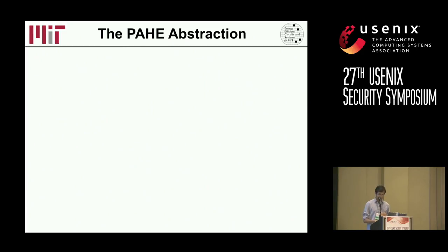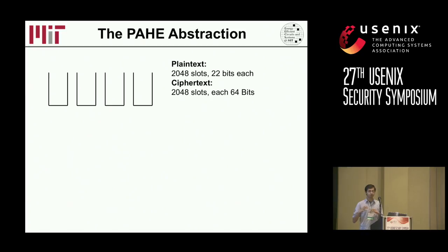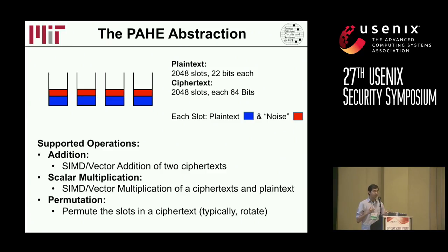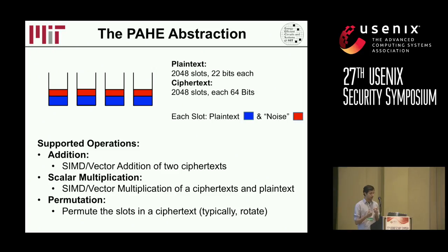Homomorphic encryption, at least the lattice-based schemes we use, can be quite complex. I'll give a simple abstraction: imagine the scheme as encrypting vectors instead of single elements. I'll call these vectors of slots. Within each slot there is plaintext data and structured noise added to maintain security. The operations supported on these encrypted vectors are: adding two encrypted vectors, adding an encrypted vector to a plaintext vector, multiplying an encrypted vector by a plaintext vector, and permuting the slots within these vectors — typically these permutations are rotations of the slots.